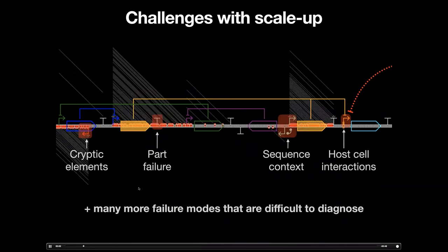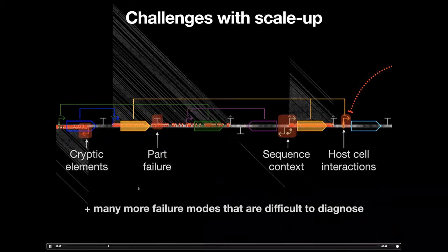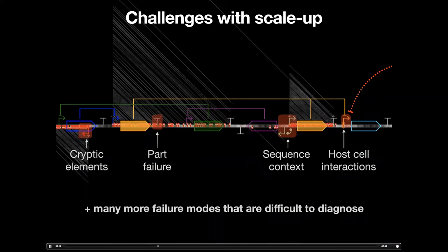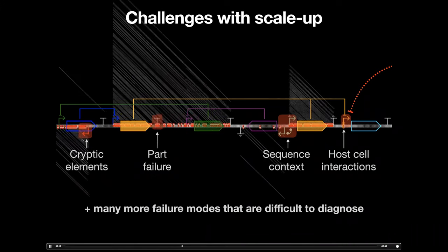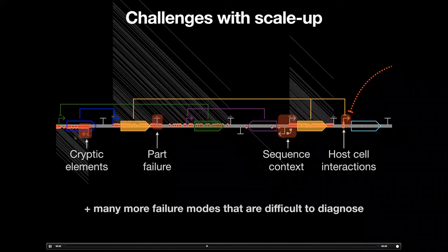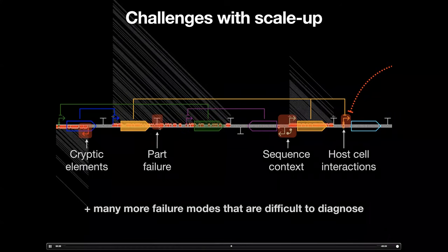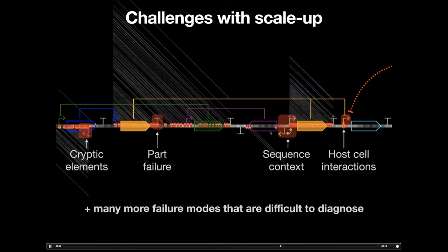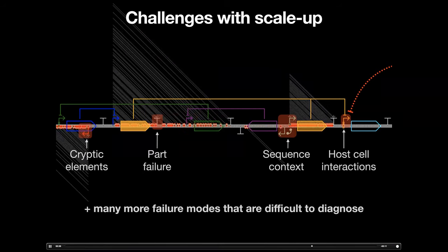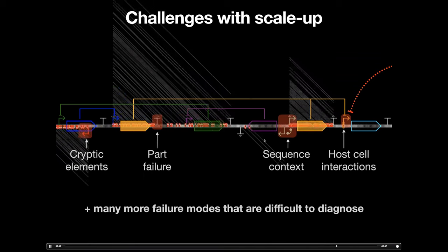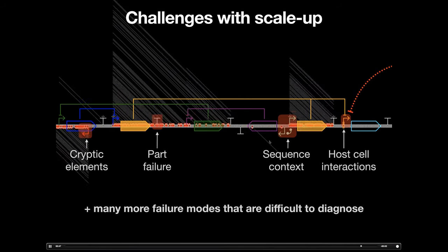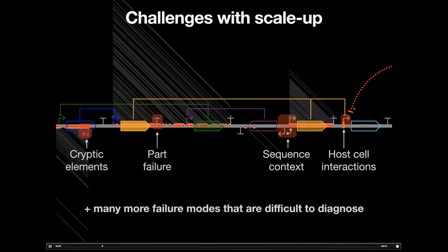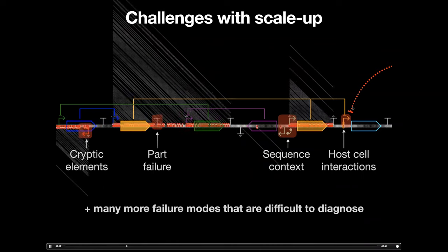The reason for this is that as the complexity of our circuits has grown, so too has the number of ways they can break. This can include accidentally incorporating cryptic promoters inside circuit elements, which affect the flows present; parts failing to work, especially when taken from different organisms; contextual effects where identical parts perform very differently in different contexts; and unintended interactions with the host cell, which can cause the circuit as a whole to fail.